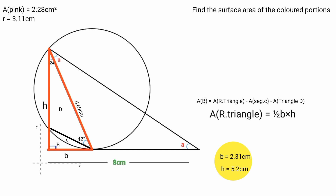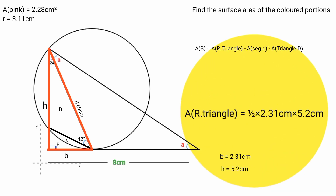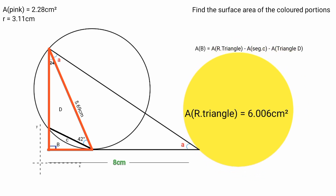Substituting these values: area of right angle triangle equals 1 over 2 times 2.31 cm times 5.2 cm, which equals 6.006 cm squared. We substitute this here.